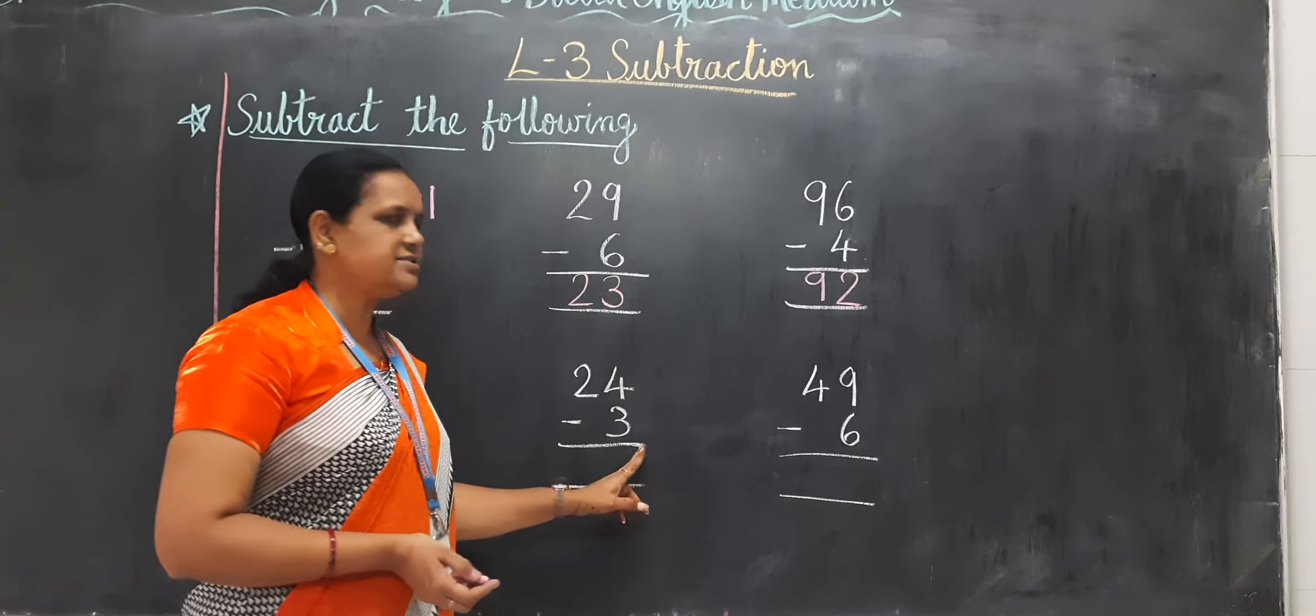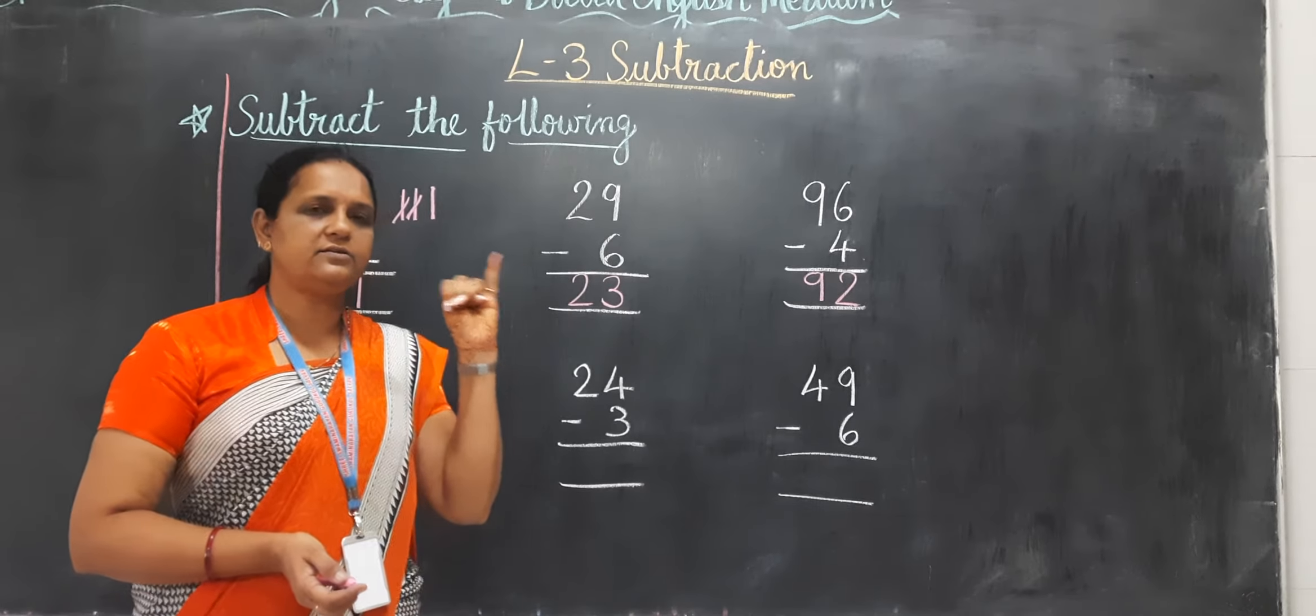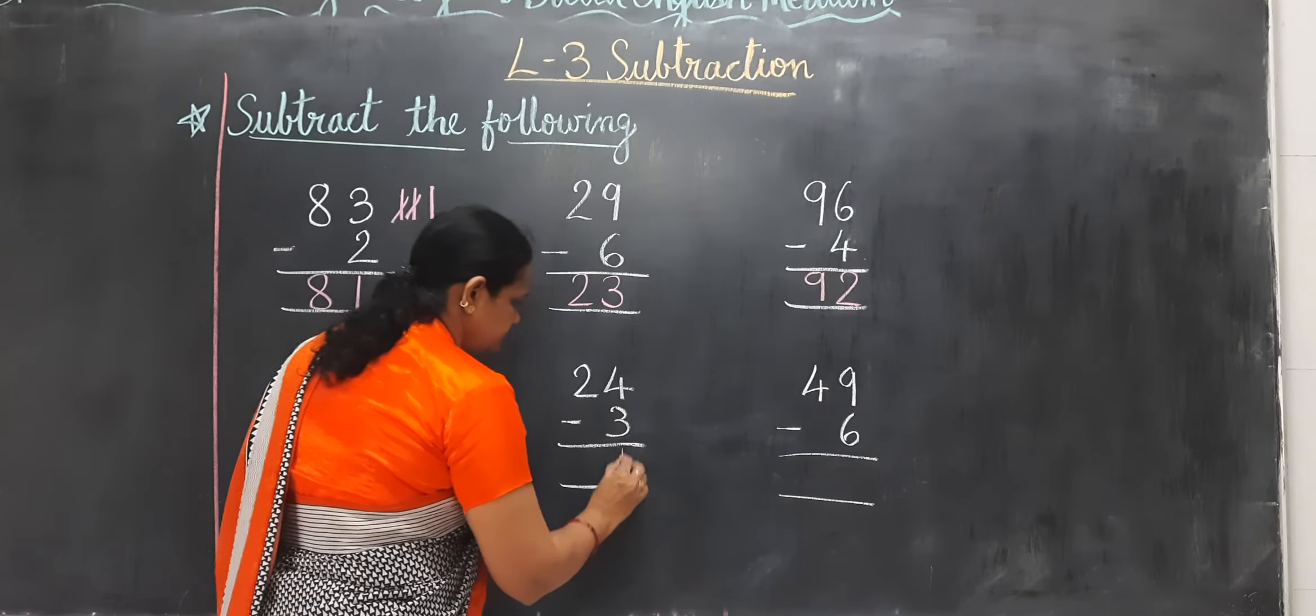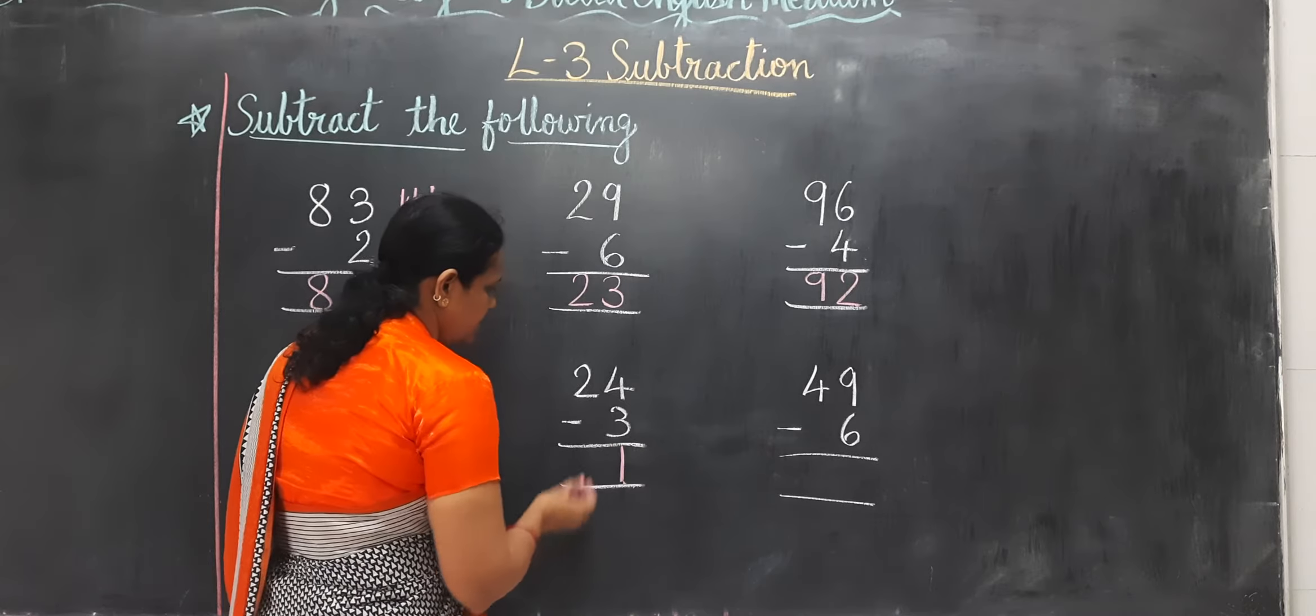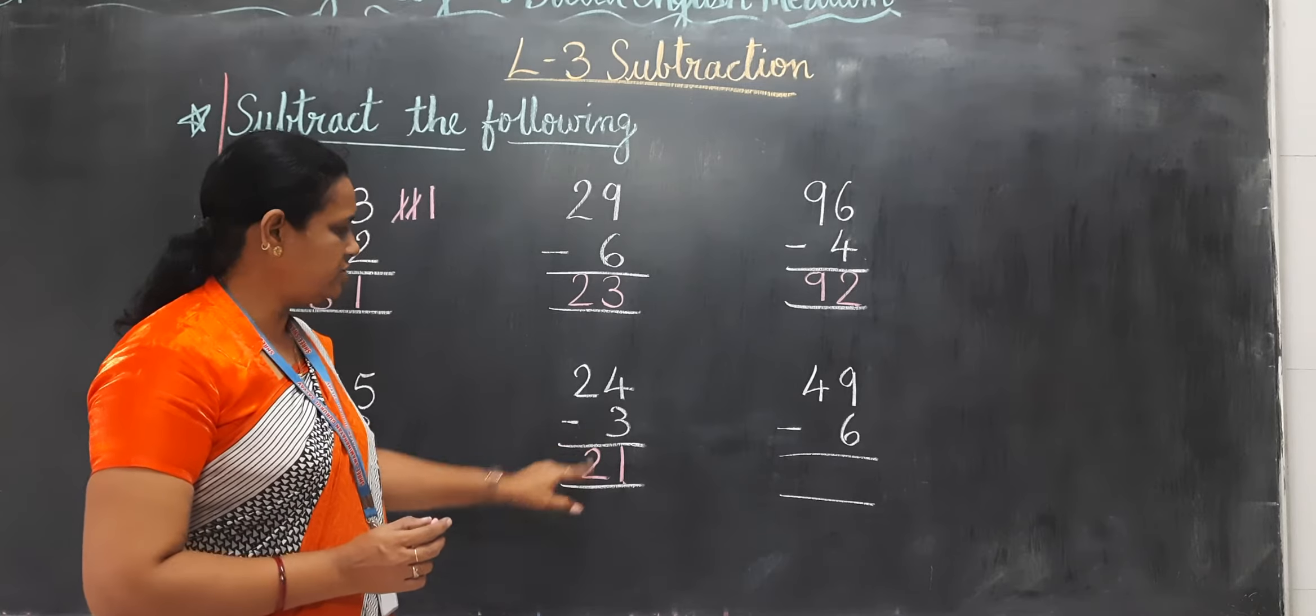Now 4 minus 3. 1, 2, 3. 1. Any number is there below 2? No. So you have to put direct 2.